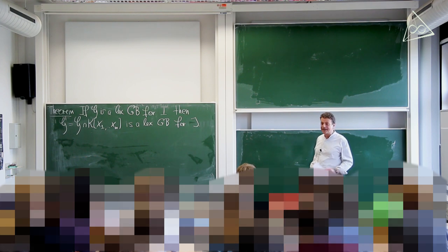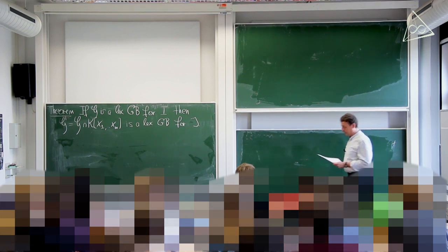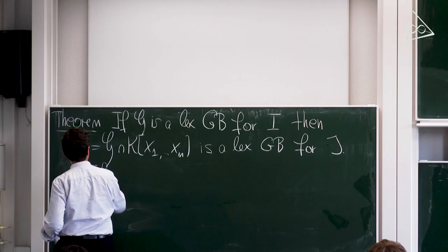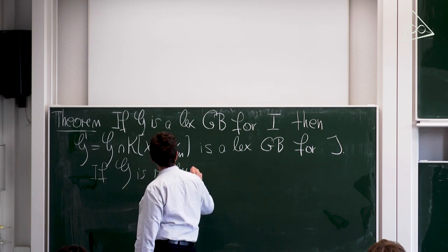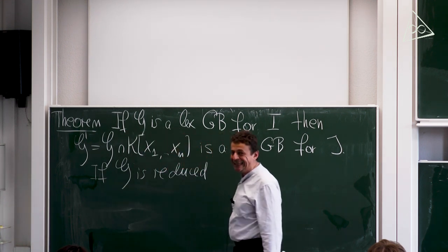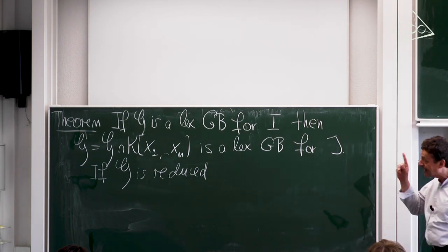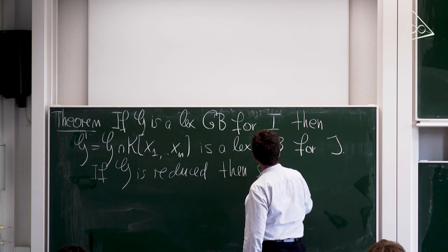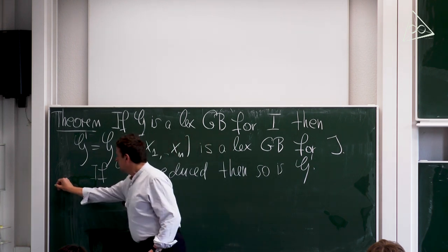So if you have a lexicographic Gröbner basis for I, you automatically have a lexicographic Gröbner basis for every elimination ideal, for m equals 1, 2, 3, and so on. It takes a long time to compute, because you're computing something very valuable and must pay a price for it.